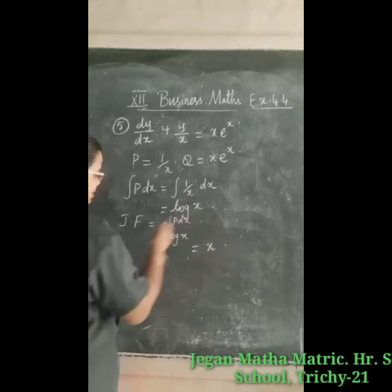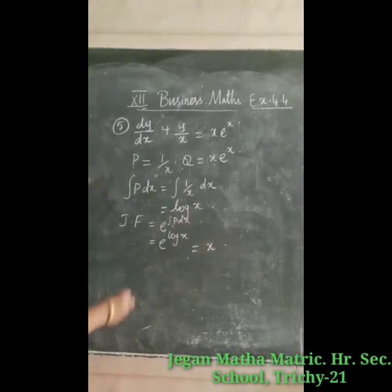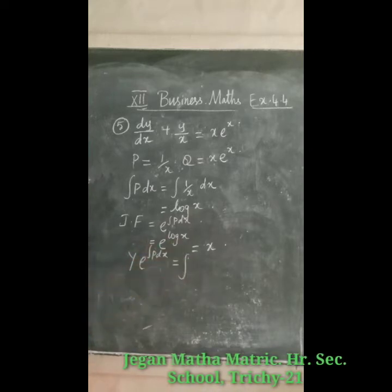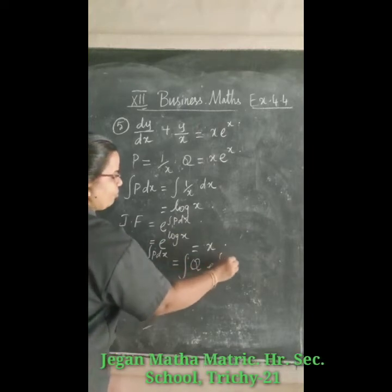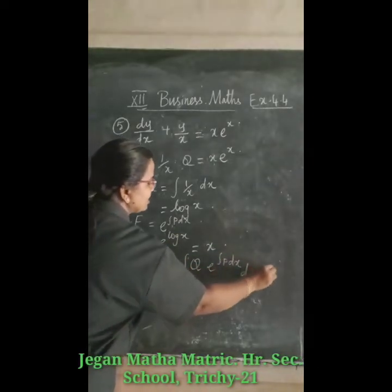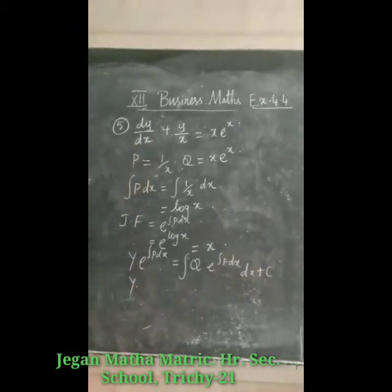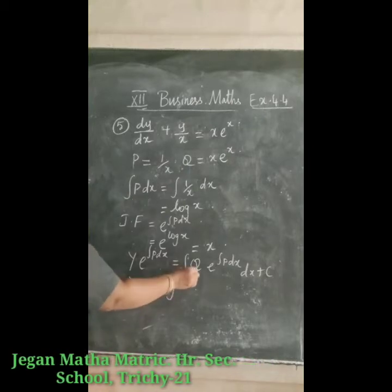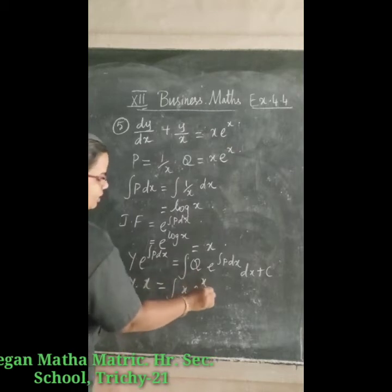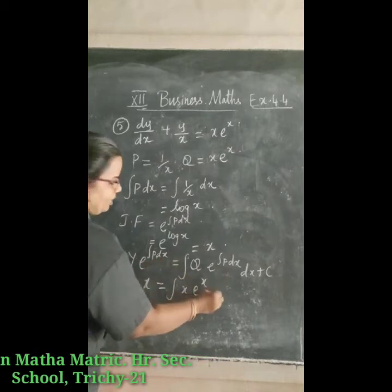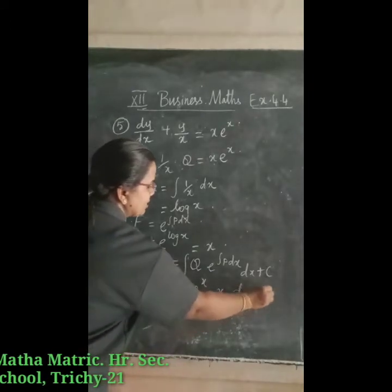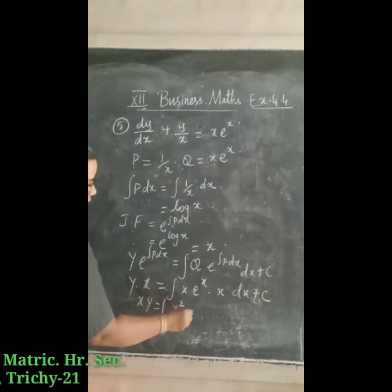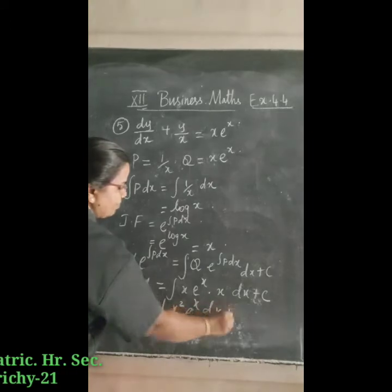Hence the solution is: y·e^(integral of p dx) = integral of q·e^(integral of p dx) dx + c. Substituting, y·x is equal to the integral of x·e^x multiplied by x dx plus c, giving xy = integral of x²·e^x dx plus c.